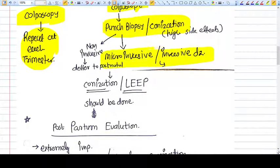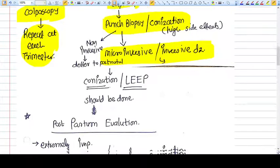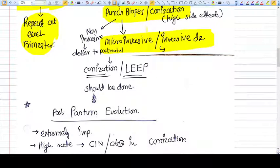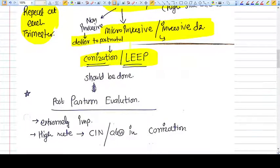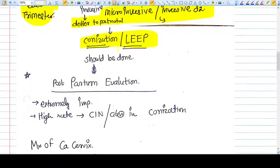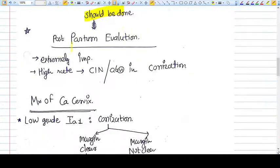After punch biopsy, you do histopathological examination to identify whether the cervical abnormality is micro-invasive or invasive. If it is non-invasive, you should defer any treatment. The best approach is conization or LEEP, which should be done postpartum. Post-partum evaluation is very important.